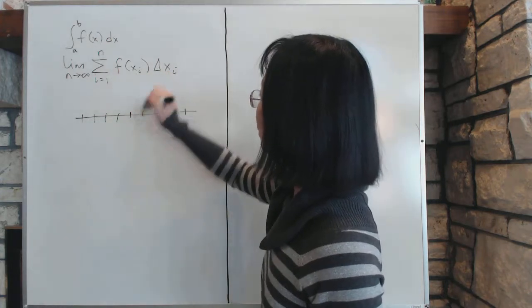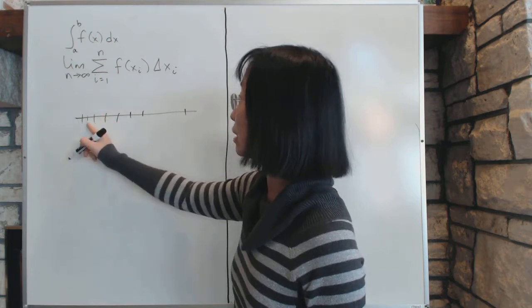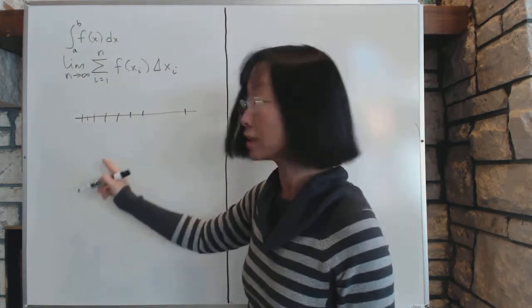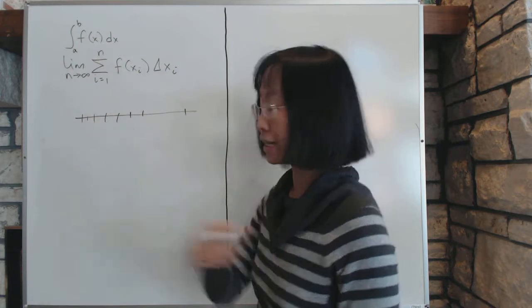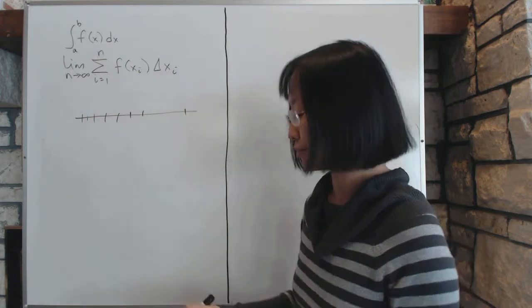So again, to remember, you just take the value of the interval and then you pick some point in here as xi. It doesn't really matter which. And then multiply together and add the whole sum up and take the limit. And if it exists, then you have your definite integral.